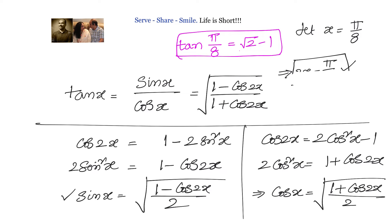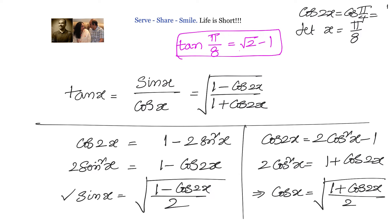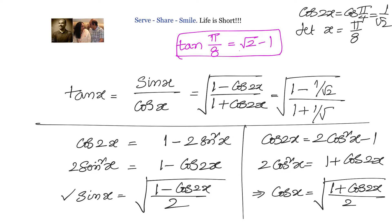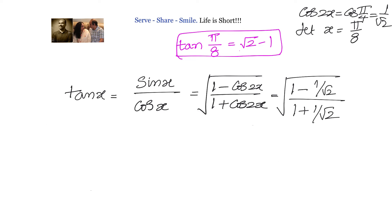Now substituting the value of cos(2x): since 2x = π/4, cos(π/4) = 1/√2. So tan(x) = √((1 − 1/√2) / (1 + 1/√2)). On simplification, this becomes √((√2 − 1) / (√2 + 1)).